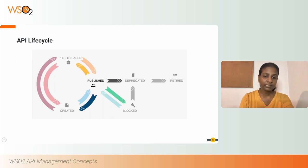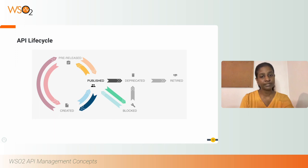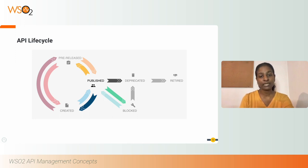When an API is in the deprecated state, new subscriptions are disabled. However, the API is still available at runtime to existing subscribers or consumers. Existing subscribers can continue to use it as usual until the API is retired. Finally, the retired state is where an API will no longer be available for use.